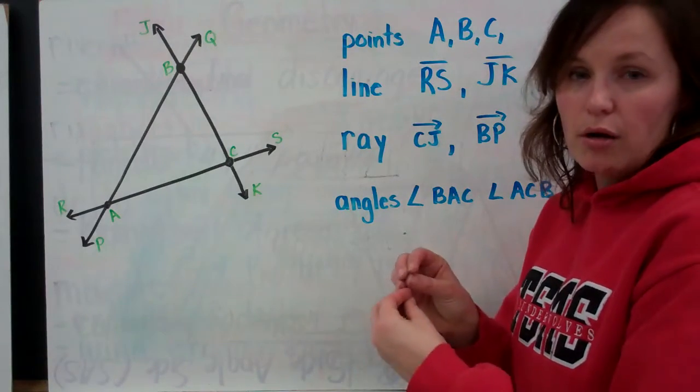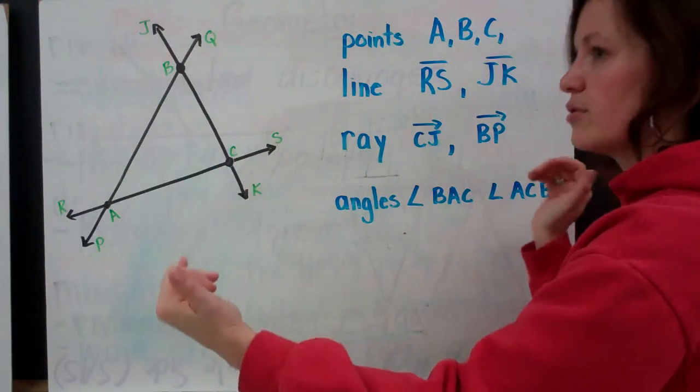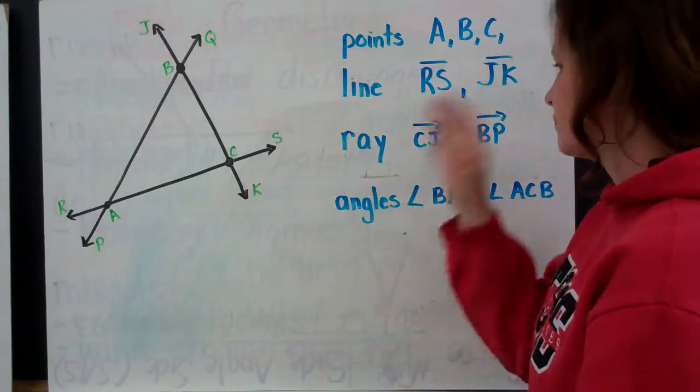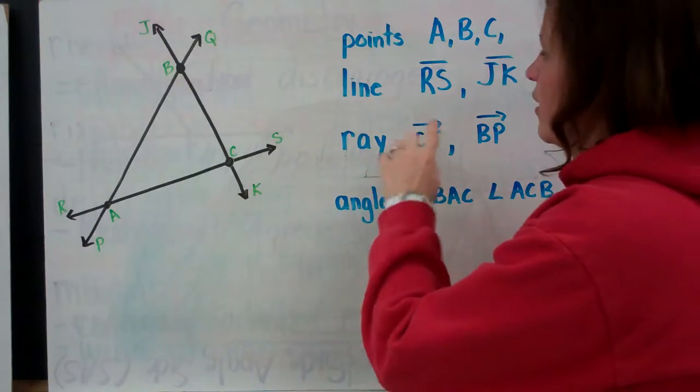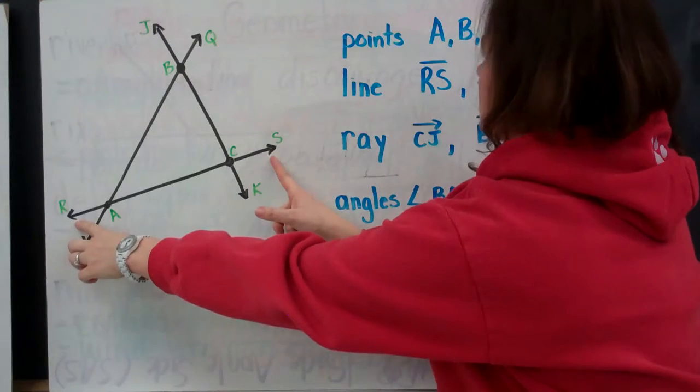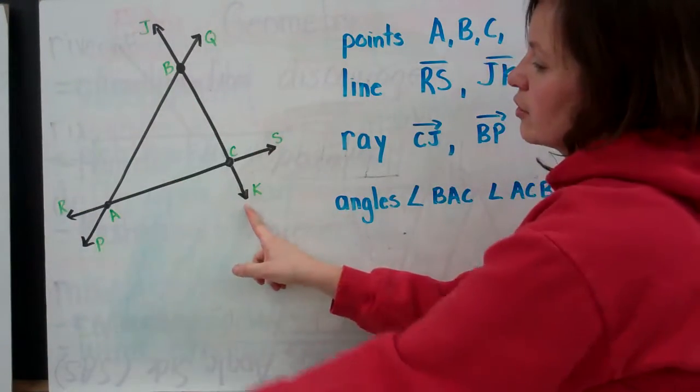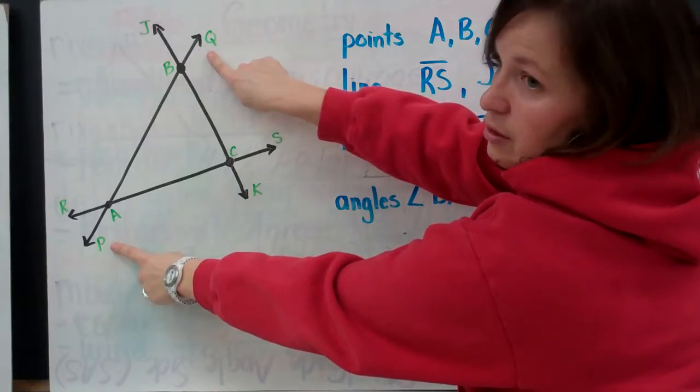My lines. Remember, our lines are a line with arrows on either side that continue on forever. So, I have line RS. I have line JK. And my third line, line PQ.